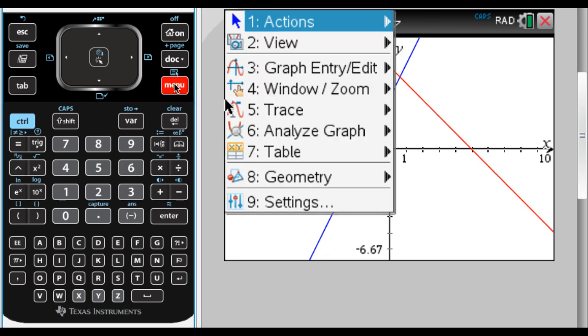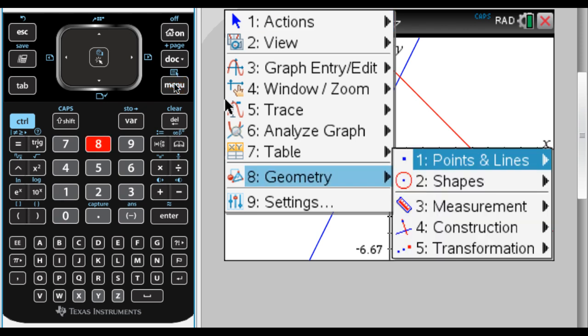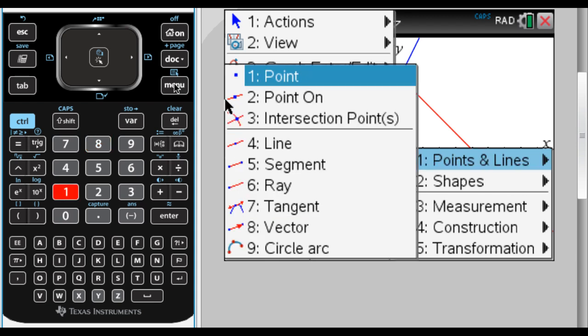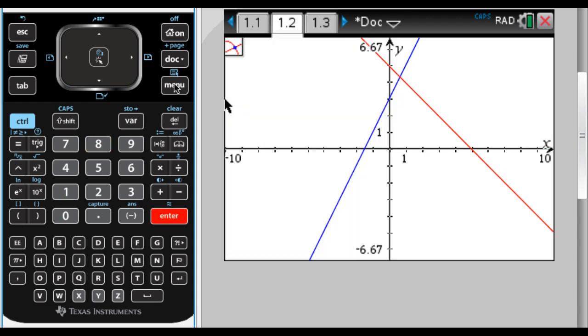Now what I'm going to do is menu. This is how I always find intersections. Option 8 is geometry, option 1 is points and lines, and option 3 is intersection points. So it's menu 8, 1, 3. You get used to pressing that really quickly. You don't even think about it.